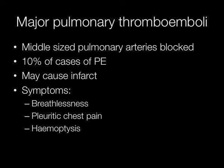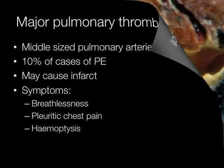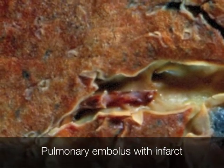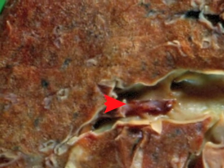Approximately 10% of cases of pulmonary thromboembolism are caused by blockage of the middle-sized pulmonary arteries by thromboemboli. These may cause an infarct. Symptoms include breathlessness, pleuritic chest pain, and hemoptysis. This is a middle-sized pulmonary artery occluded by thromboembolism. The reddish area of lung towards the left of the picture is an area of pulmonary infarction.